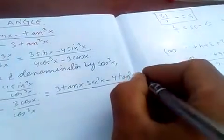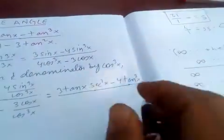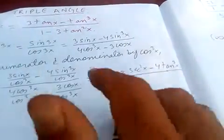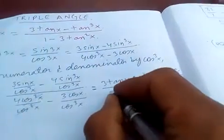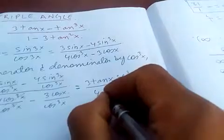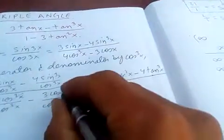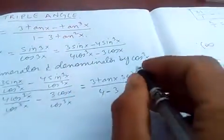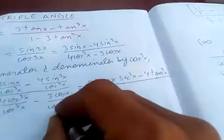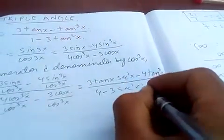Just tan x, and this one cancels. So we get 4, and minus. When cos cancels, we get 1 over cos²x, which is sec²x.